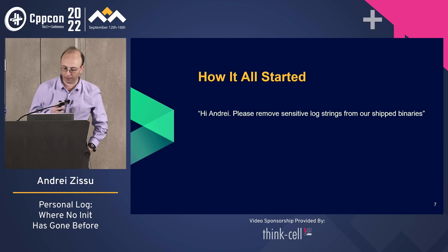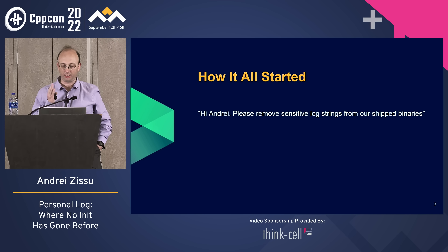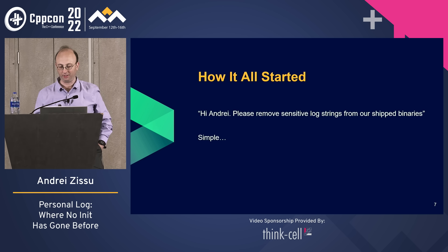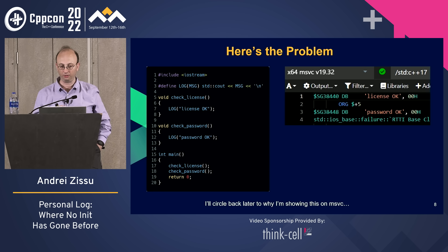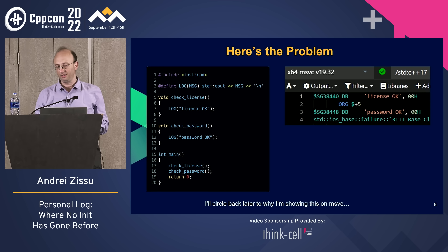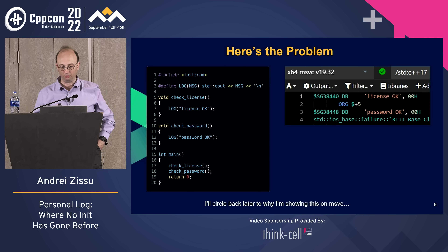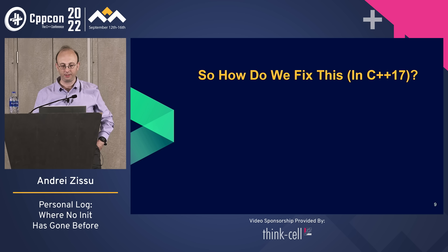Let's start at the beginning, about six months ago. I was tasked with the not-so-simple task of removing log strings from shipped binaries. Say this is your production code doing password checks and license checks — you'd rather not make life too easy for hackers by having log strings that can be easily detected in the binary, showing where you're doing your license or password check. I had to work with C++17, which makes things a little harder than C++20 but would have been impossible in C++14.